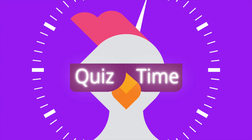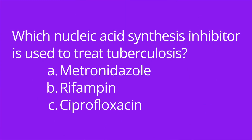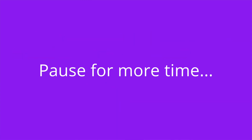All right, it's quiz time, and I have three multiple choice questions. Question number one: which nucleic acid synthesis inhibitor is used to treat tuberculosis? A. Metronidazole. B. Rifampin. Or C. Ciprofloxacin. The answer is B. Rifampin.